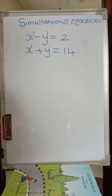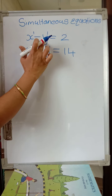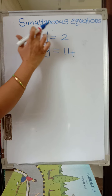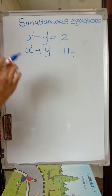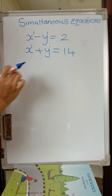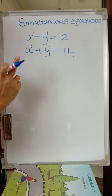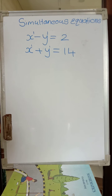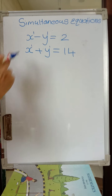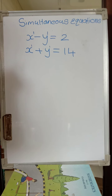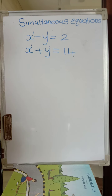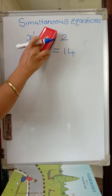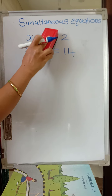So in both cases we have degree of the variable as 1, and we have two variables. Such equations which have two variables and degree — that means maximum power or index of the variable — is 1, we call them linear equations in two variables. This is a linear equation because degree is 1 and there are two variables.